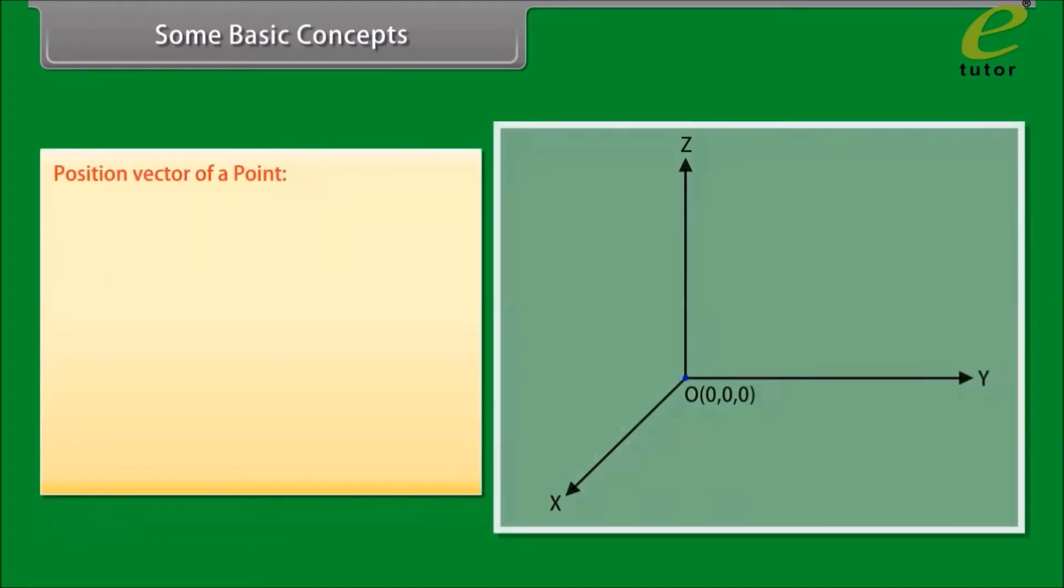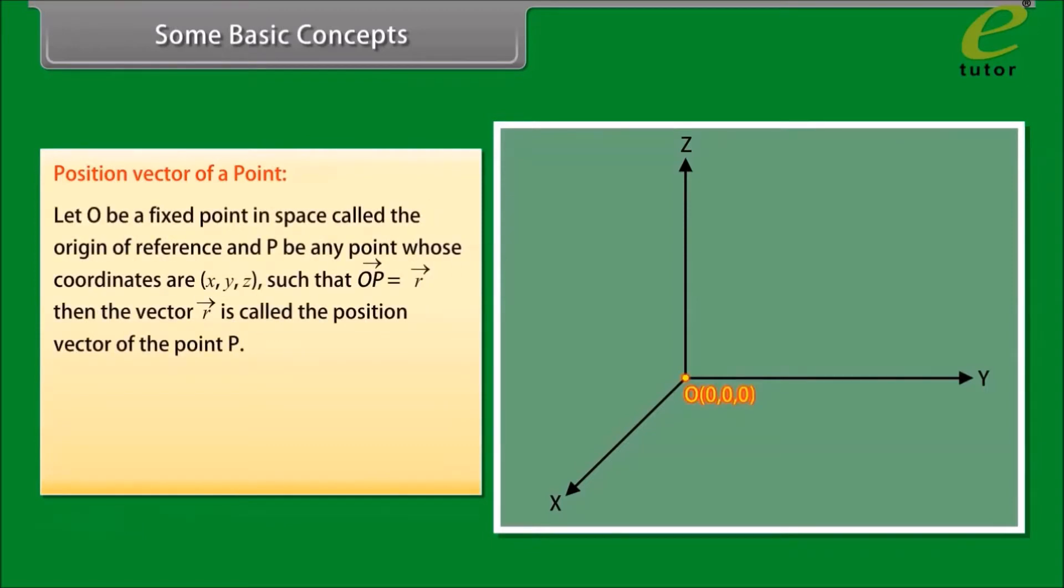Some basic concepts: position vector of a point. Let O be a fixed point in space called the origin of reference and P be any point whose coordinates are X, Y, Z such that vector OP is equal to vector R. Then the vector R is called the position vector of the point P.